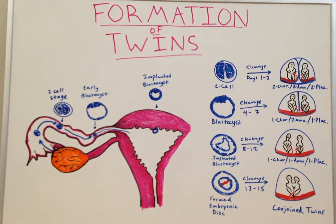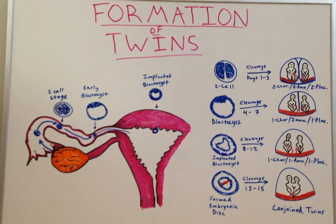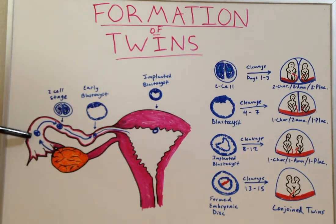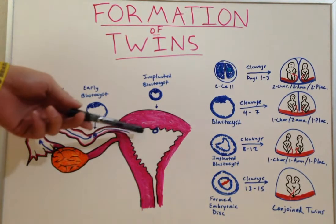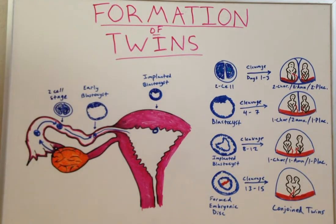Today's lecture will discuss the formation of twins in embryological development, specifically monozygotic or identical twins. In regular embryological development, when an egg is released from an ovary into the ampulla of the fallopian tube, it is normally fertilized by a single sperm cell and continues down the fallopian tube where it eventually becomes a morula, a blastocyst, and then implants in the endometrial lining.